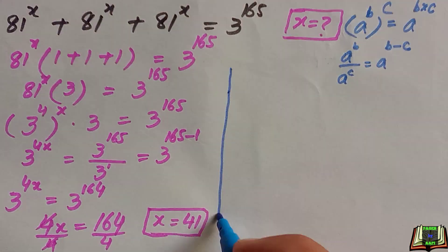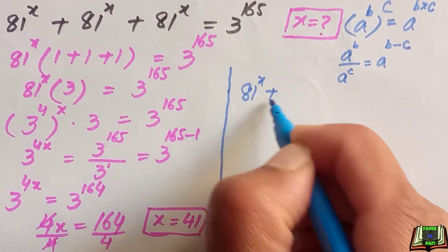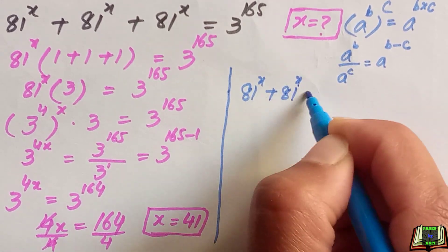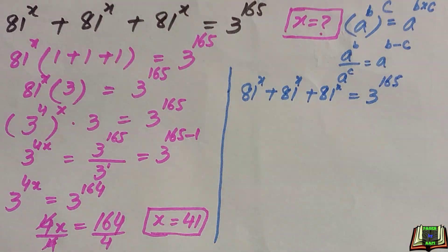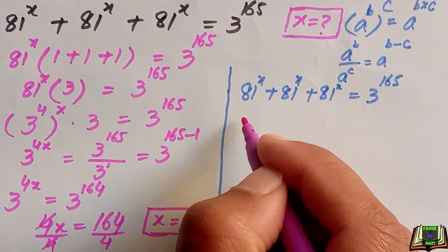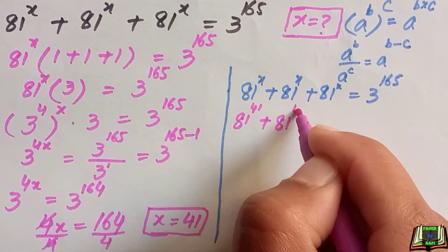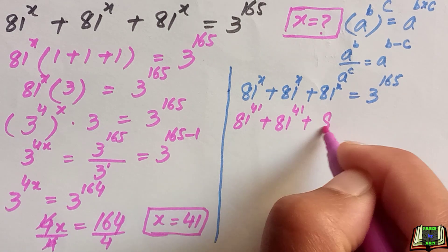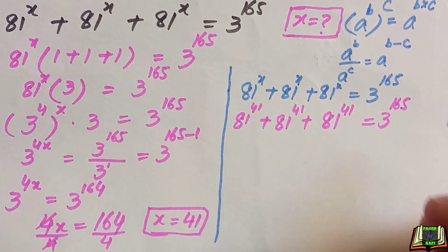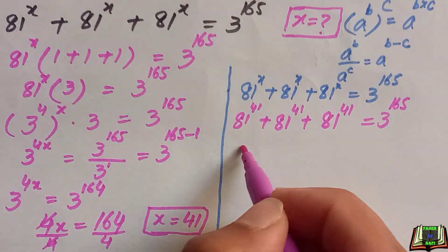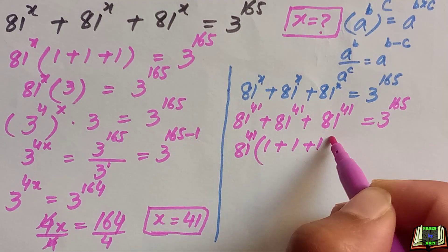In the next step we will check whether x equals 41 is correct by substituting this value back into the given equation. So: 81 raised to power 41 plus 81 raised to power 41 plus 81 raised to power 41. We factor out 81 raised to power 41 and inside the bracket we have 1 plus 1 plus 1, which equals 3.